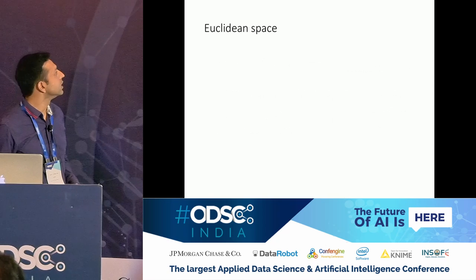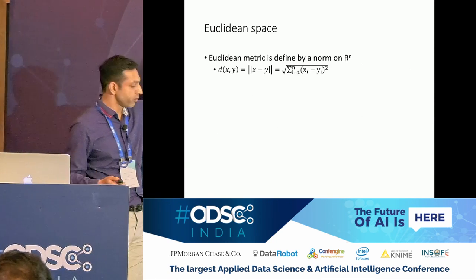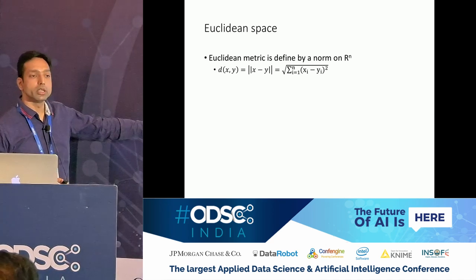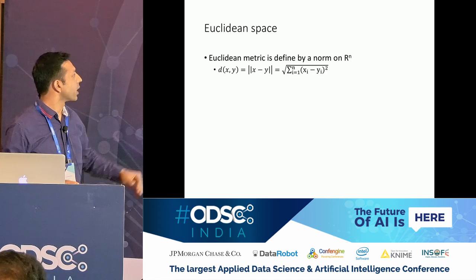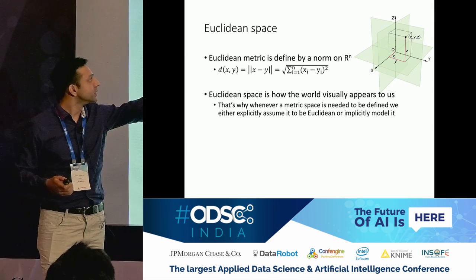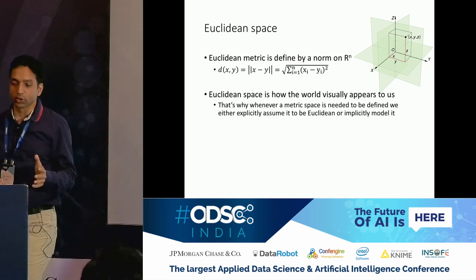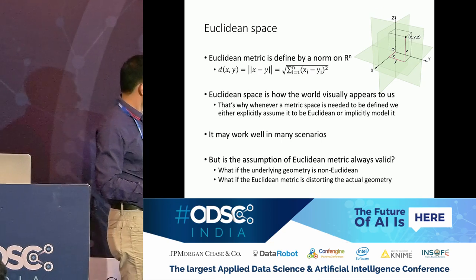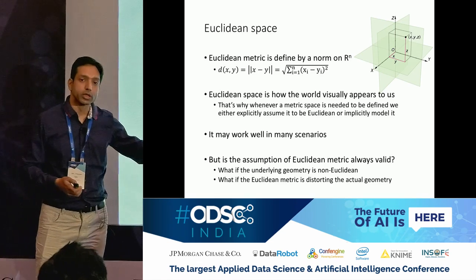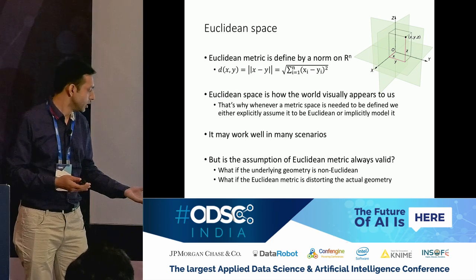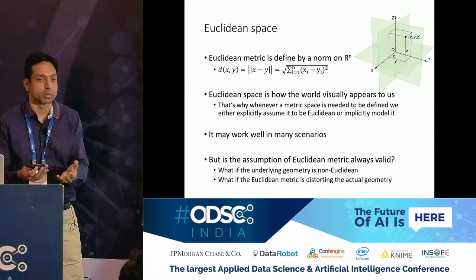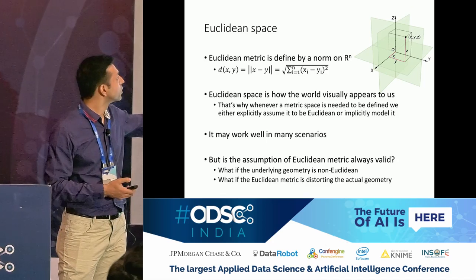The most intuitive example is Euclidean space — the formula we know from school: square root of the sum of squared differences. It's applied by default in the majority of clustering algorithms. But it has drawbacks. We need to ask: is the assumption of a Euclidean metric valid? What if the geometry is not Euclidean, not a flat space? By forcing Euclidean distance, we may be distorting the actual geometry and adding artificial information not present in the data. These are the nuances of Euclidean space that are used by default in all major algorithms.